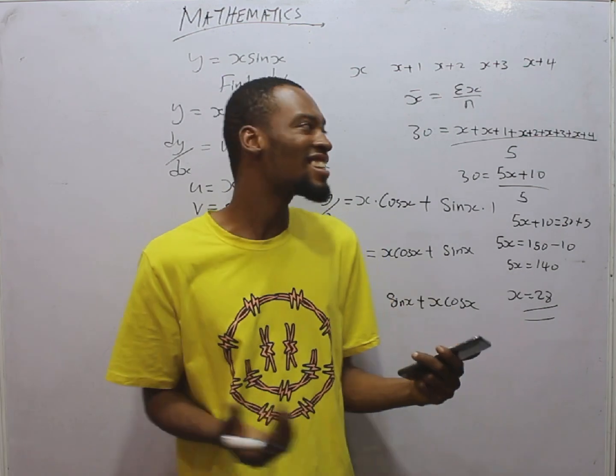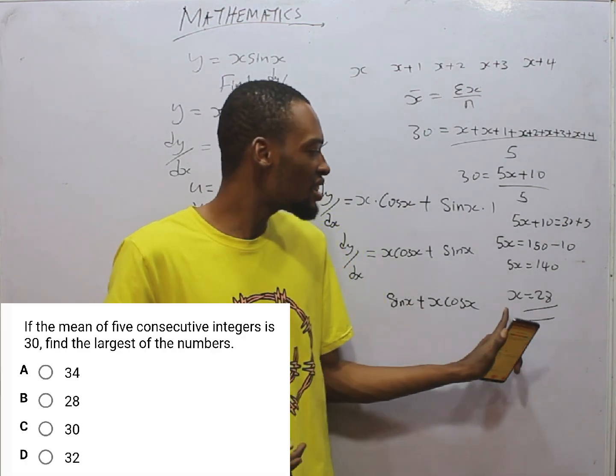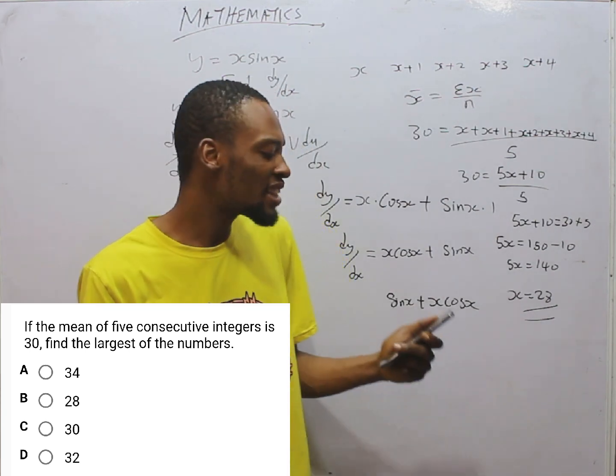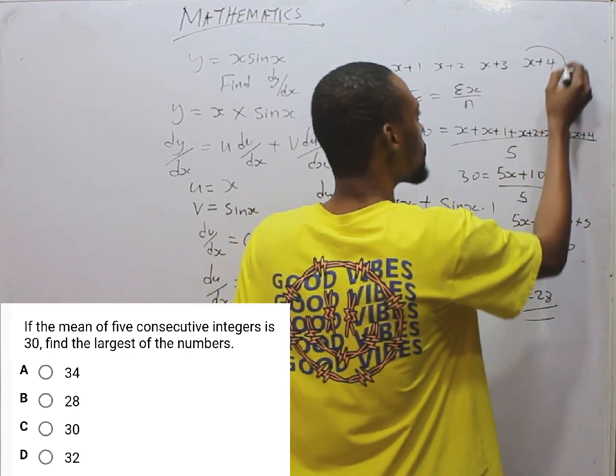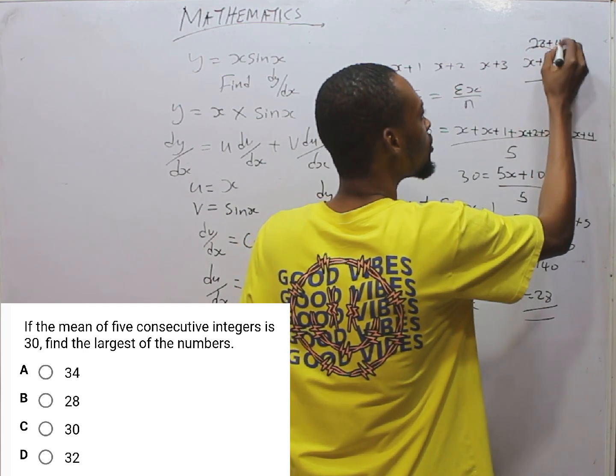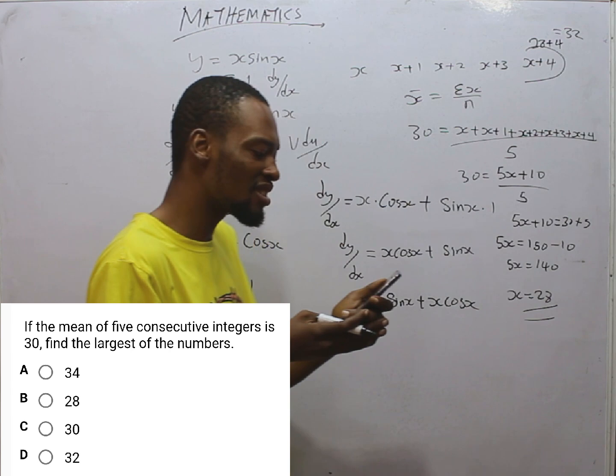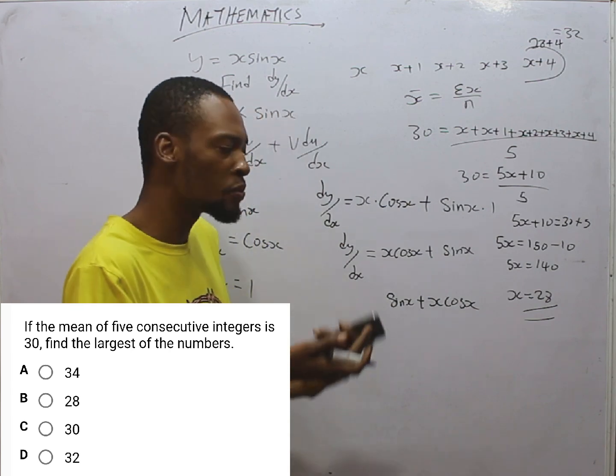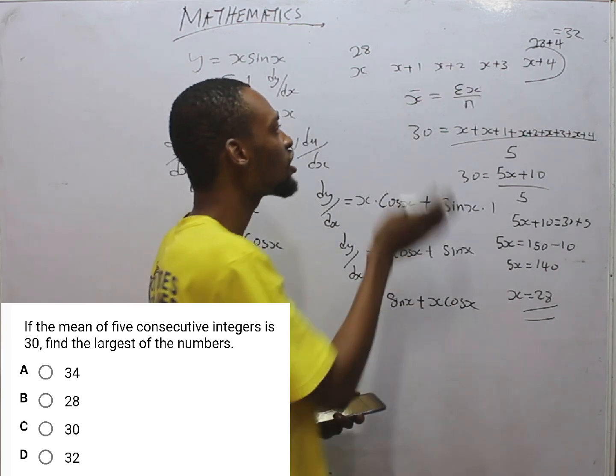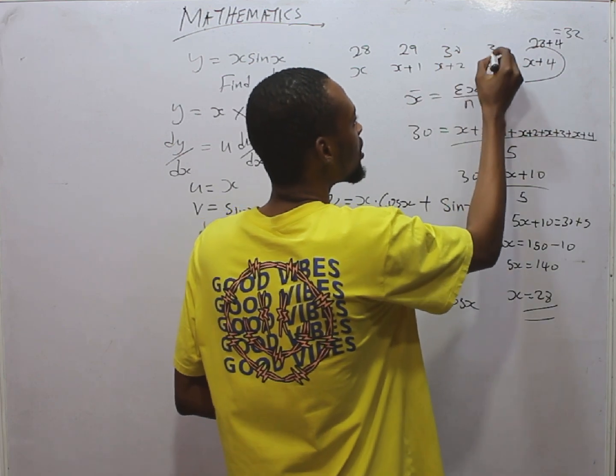Which means 5S plus 10 equals 30 times 5. 5S is simply equal to 30 times 5 is 150 minus 10. 5S equals 140. So S equals 28, which is 140 over 5. Now don't just rush and say 28 is the answer. Option B is not the answer. This is the first number. We are asked to look for the largest number. The largest number will simply be when S is plus 4. Since S is 28, the largest number will be 28 plus 4, that is 32. So 32 is the largest number.